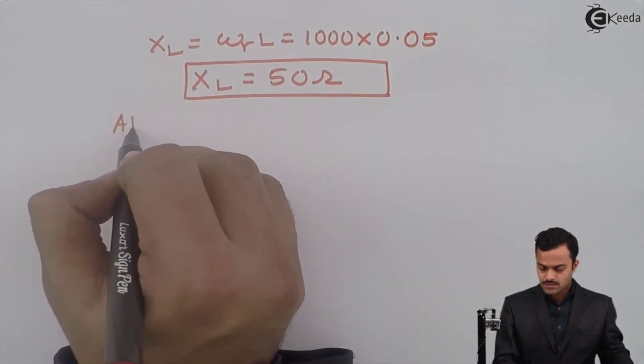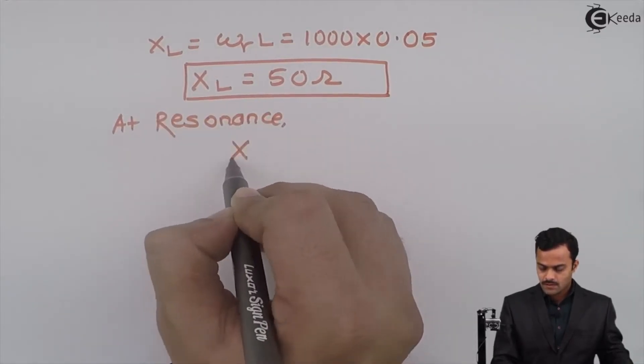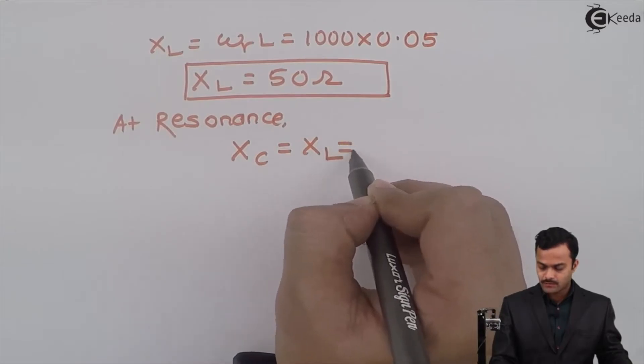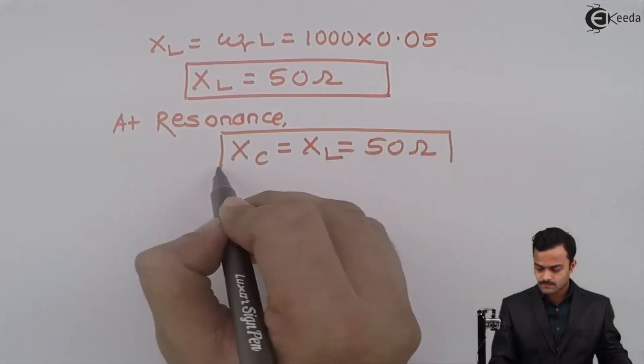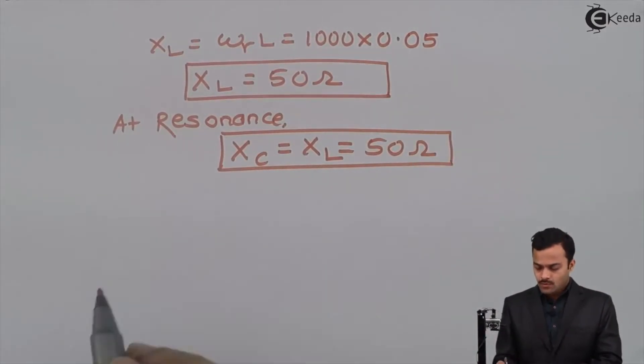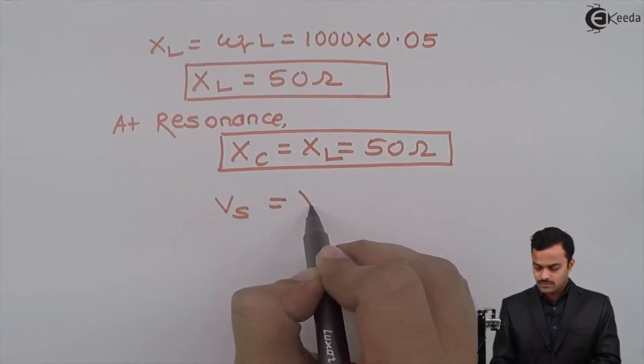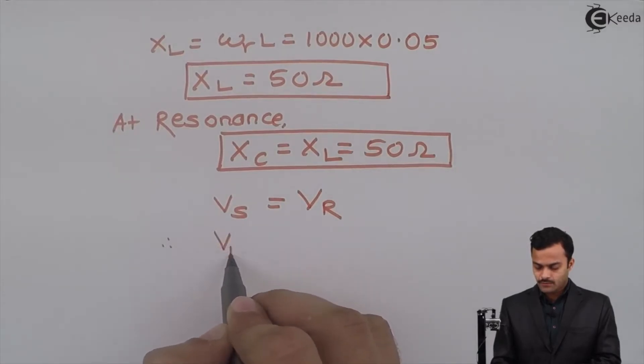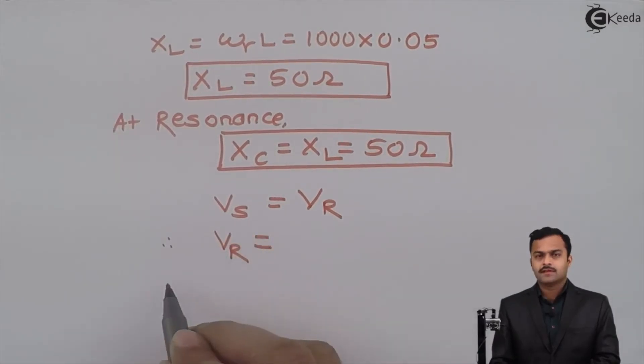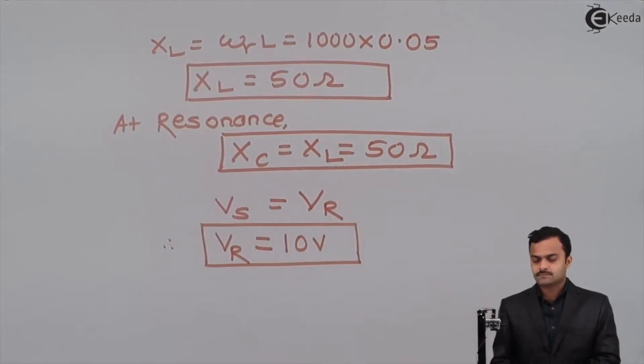Since it is the resonance, I can say at resonance whatever the voltage you are supplying that will come across resistance alone. I can say voltage across resistance equal to Vs given as 10 volt.